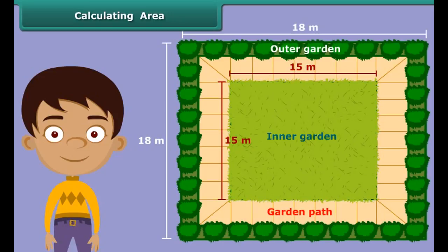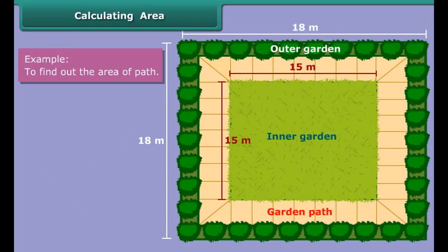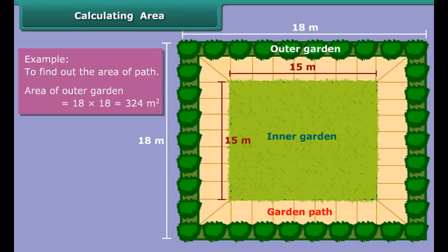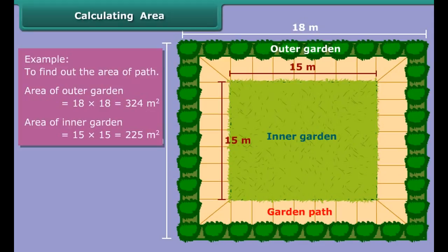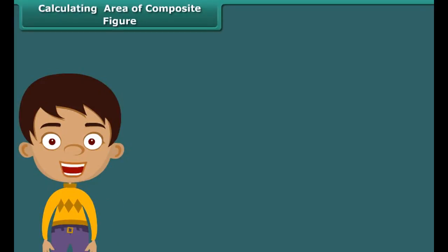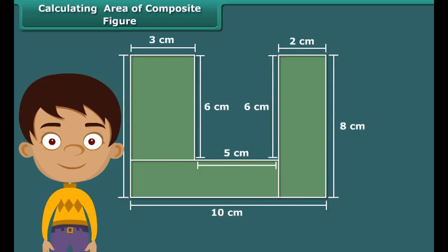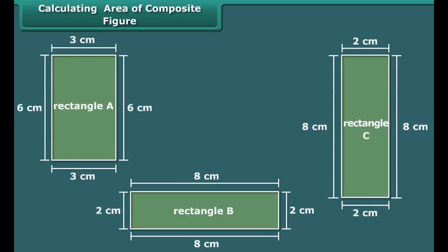Suppose there is a square garden of 18 meters. We want to make a provision for a path on all four sides. The inner garden, after the path is made, should be of 15 meters. We want to find the area of the path. To do so, calculate and deduct the area of the inner garden from the area of the outer garden. Area of the outer garden is 324 square meters and area of the inner garden is 225 square meters. So the area of the path will be 324 square meters minus 225 square meters, which is equal to 99 square meters.